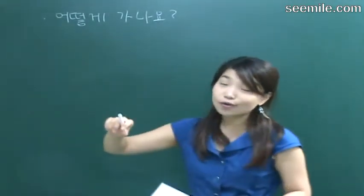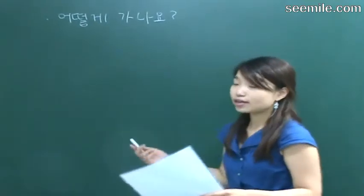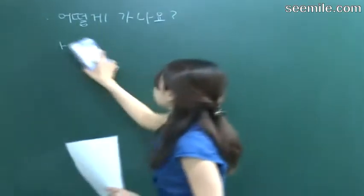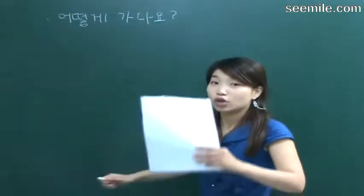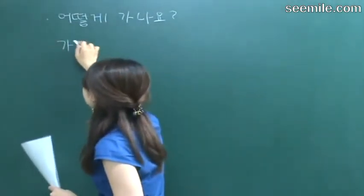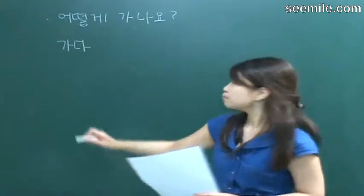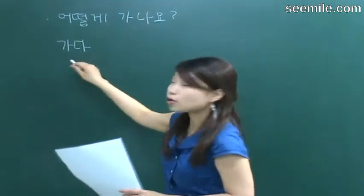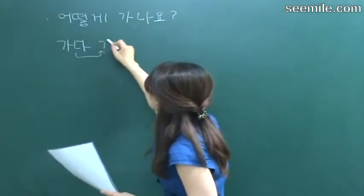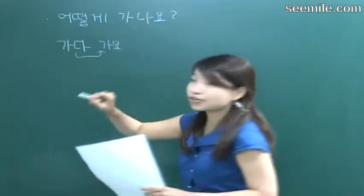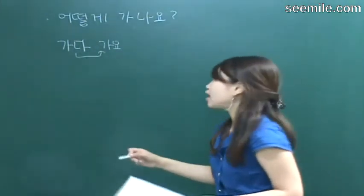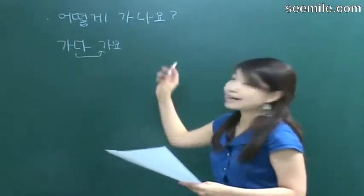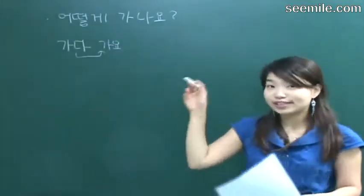어떻게 means how. 가나요 — how to get there. 가다, right? We change the form to 가나요. You want to ask something, as a written form and change to speaking form: 가요. 어떻게 가요? That's fine — you can ask how to get there. 어떻게 가요? That's fine. 어떻게 가나요? It's the same meaning. That's the topic today — 오늘의 topic이에요.